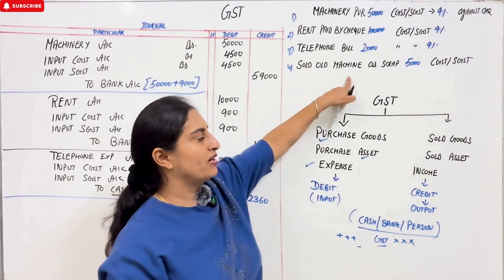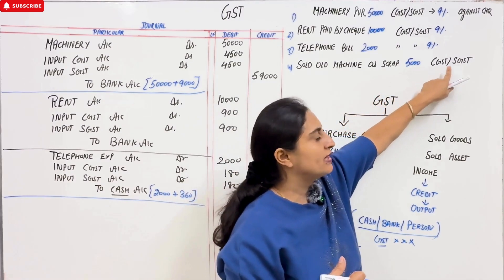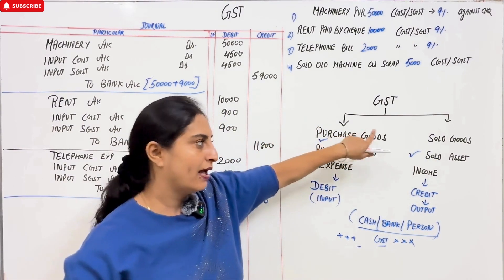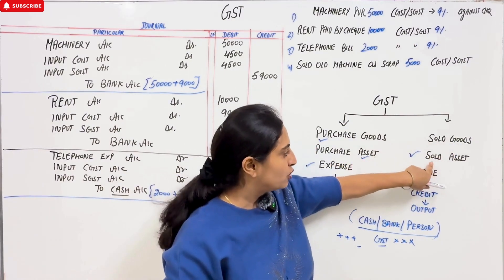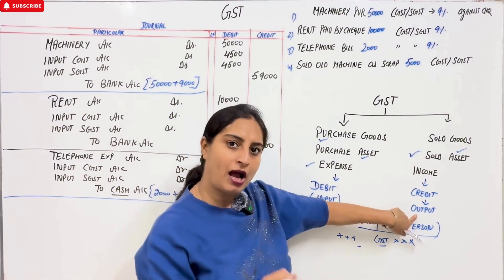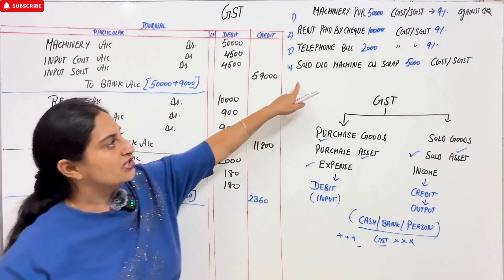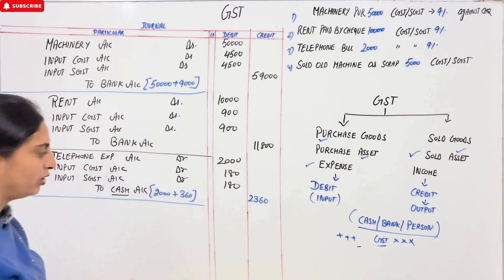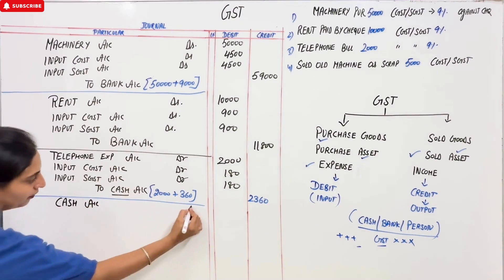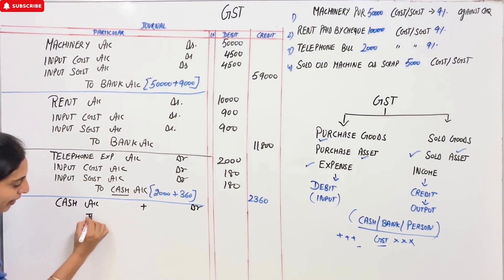Next entry: sold old machinery for cash Rs. 5,000, charging CGST and SGST at 9% each. We sold an asset. When goods are sold, we use the sale account; when an asset is sold, we use the asset's name — Machinery Account — going to credit. The tax on a sale is output, so it also goes to credit. In debit, since it was sold for cash, we write: Cash Account — Debit. Cash and bank always have GST added to them, not shown separately.